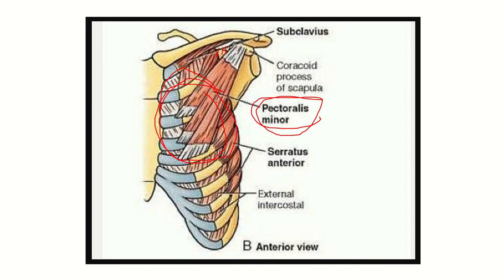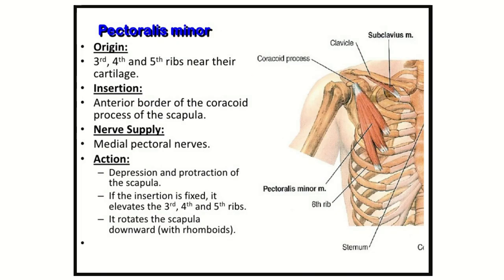Above the pectoralis minor there is pectoralis major, then the breast. During breast surgery, axillary clearance level 3 lies at this area, so for access the pectoralis minor muscle is cut. The pectoralis minor muscle arises from the third, fourth, and fifth ribs and is inserted into the coracoid process of the scapula.